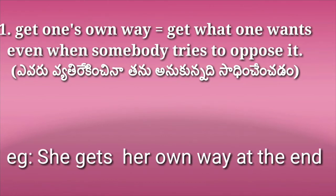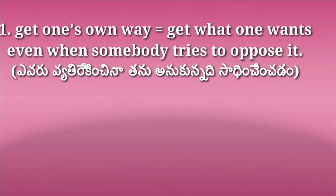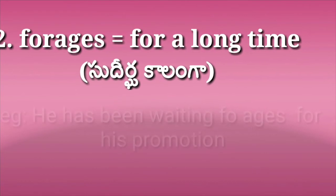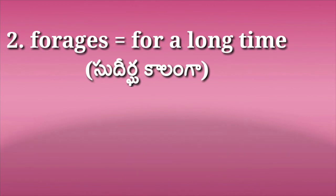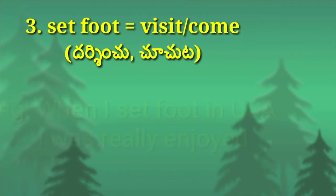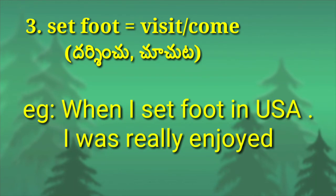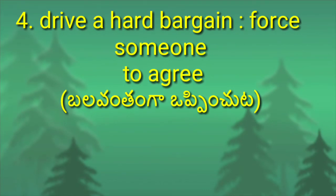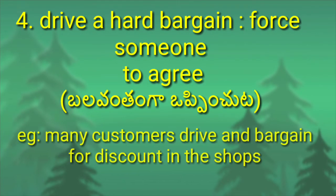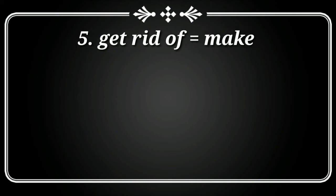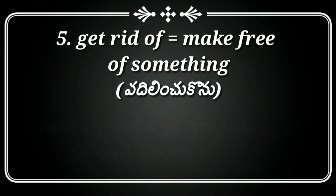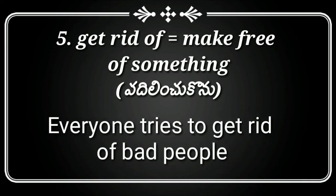The first example: 'get one's own way,' which means to get what one wants even when somebody tries to oppose it. Example: She gets her own way. Second: 'for ages,' which means for a long time. Example: He has been waiting for his promotion for ages. Third: 'set foot,' which means to visit or come to a place. Example: When I set foot in the USA, I was really very excited. Fourth: 'drive a hard bargain,' which means to force someone to agree to terms. Example: Many customers drive a hard bargain for a discount in the shops.